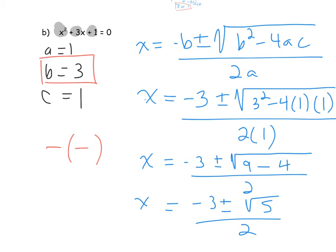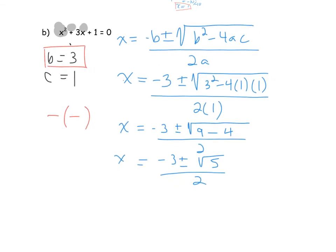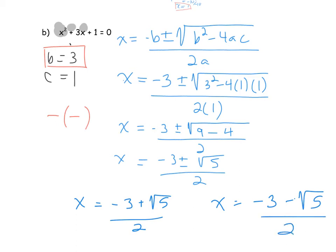In the case of a purely algebraic exercise, leave the 5 under the root. So the roots are x = (-3 + √5) / 2 and x = (-3 - √5) / 2. We have two different solutions. If you evaluated these you'd see they are lengthy decimals, confirming that factoring was not possible and the quadratic formula was the right choice.